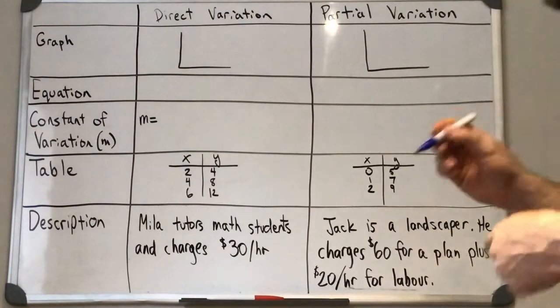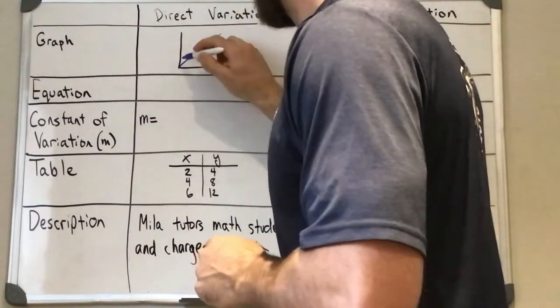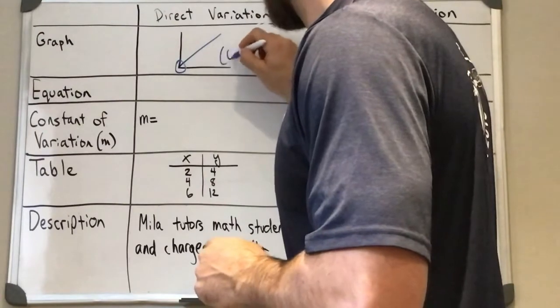So first off, the graph for direct variation is always going to pass through that point (0,0), which is also known as the origin.